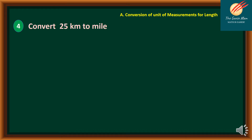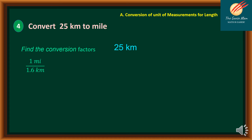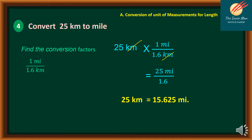On number 4, let's convert metric to English system: convert 25 kilometers to miles. We find the conversion factor: 1 mile is equal to 1.6 kilometers, and this is our fraction form. So we multiply 25 kilometers times 1 mile over 1.6 kilometers. Factoring out the kilometers, we have 25 times 1 divided by 1.6. Therefore, 25 kilometers is equal to 15.625 miles.